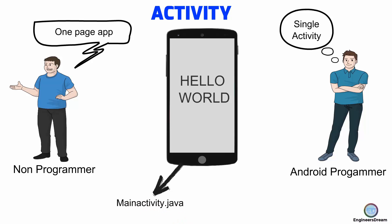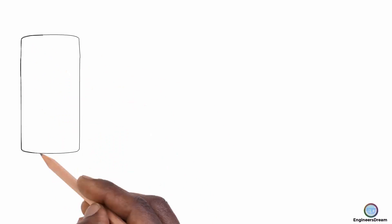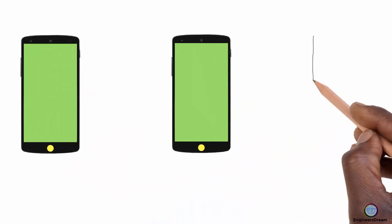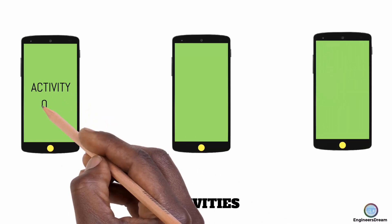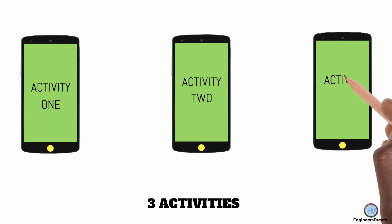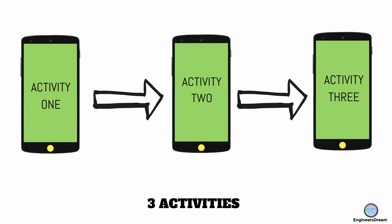A single activity is made up of two main files: MainActivity.java and activity_main.xml. So if you have an application which consists of three pages, then in technical terms your application consists of three activities. Now if you have three activities inside your application, you need some component to communicate between these activities — to jump from one activity to another. To do that, we use a component called an intent.